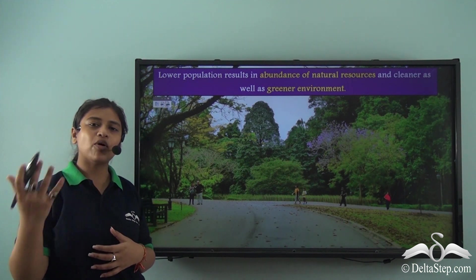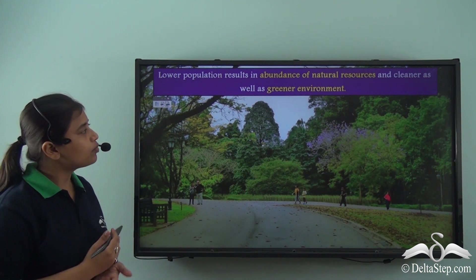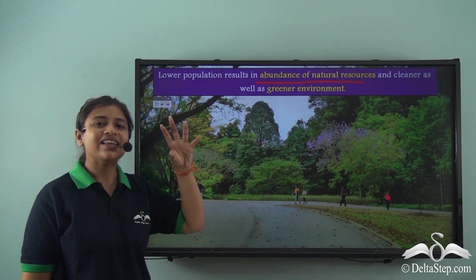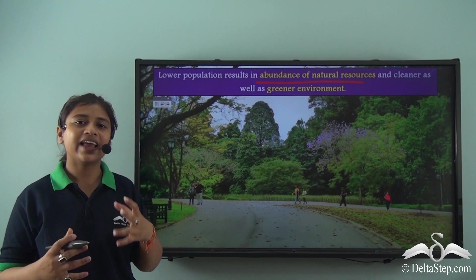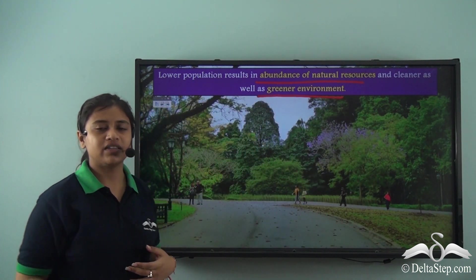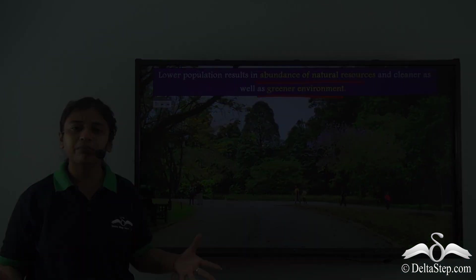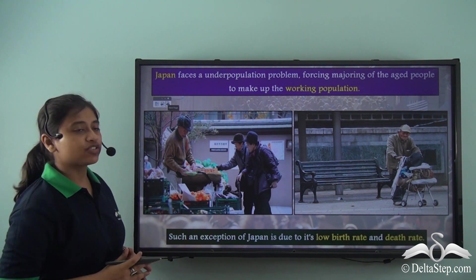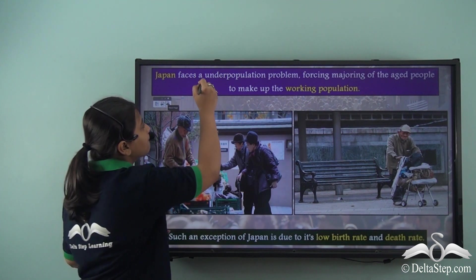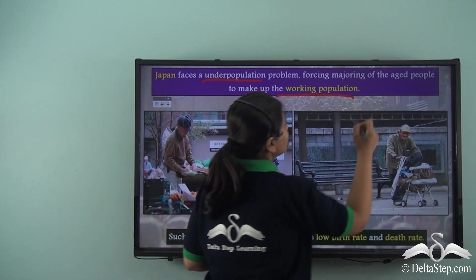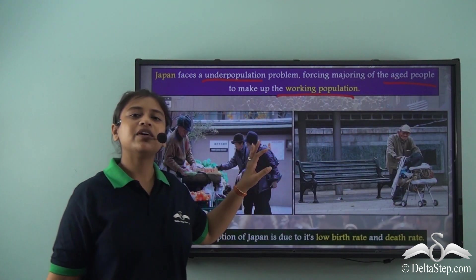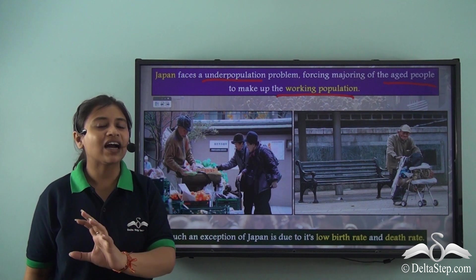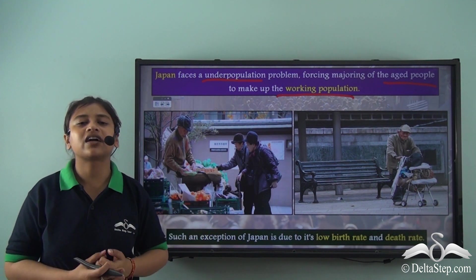Underpopulation also has a positive side. Lower population results in an abundance of natural resources, less congestion, less competition for limited resources, and hence a cleaner and greener environment. There are enough jobs available for all people, and pollution is very low. However, Japan is an exception that faces the problem of underpopulation, where the working population comprises mostly aged people. The aged make up the working population of the country, which also reflects that the medical infrastructure of this underpopulated country is very strong.